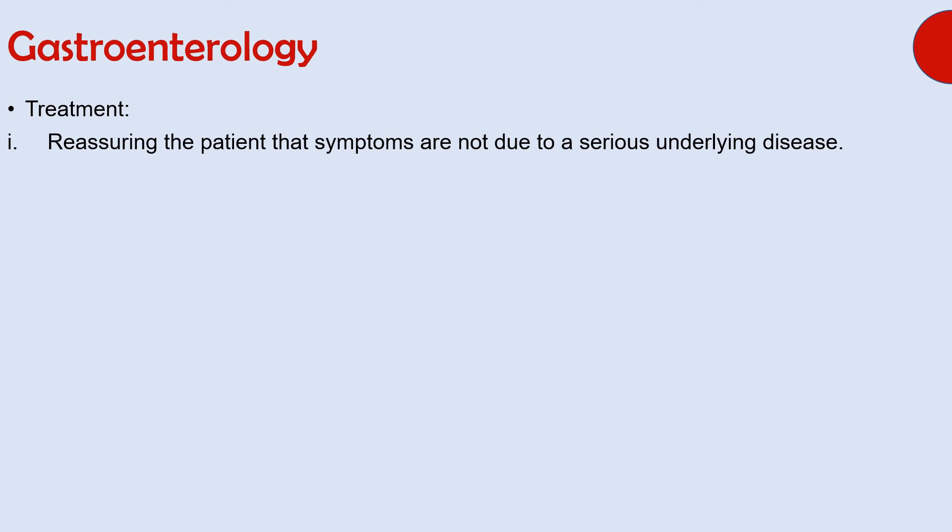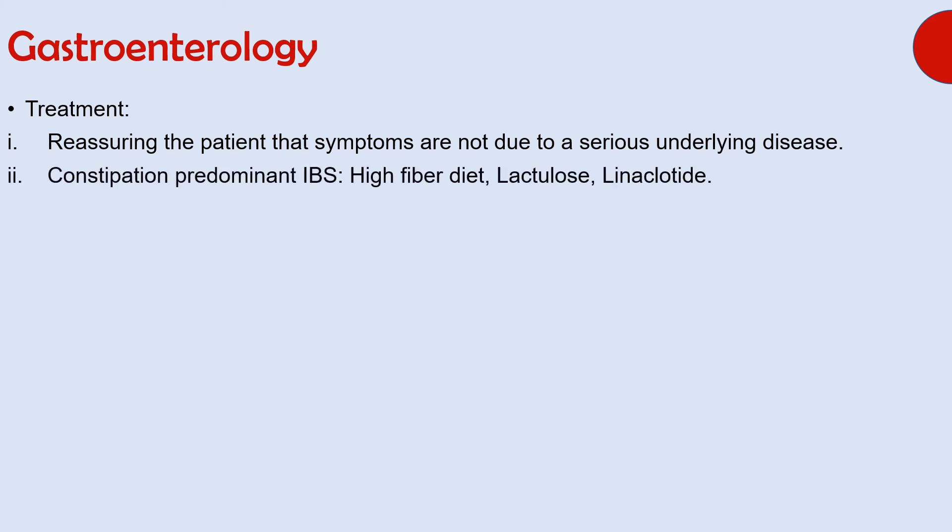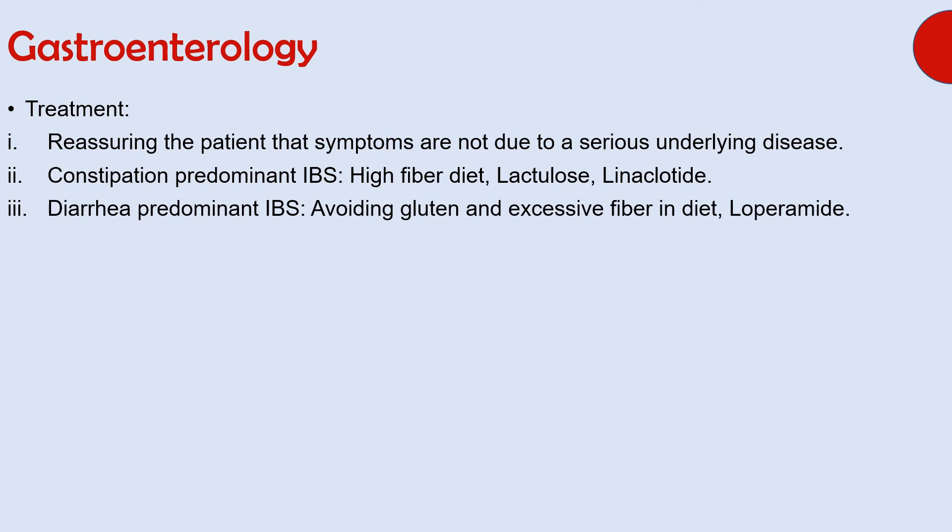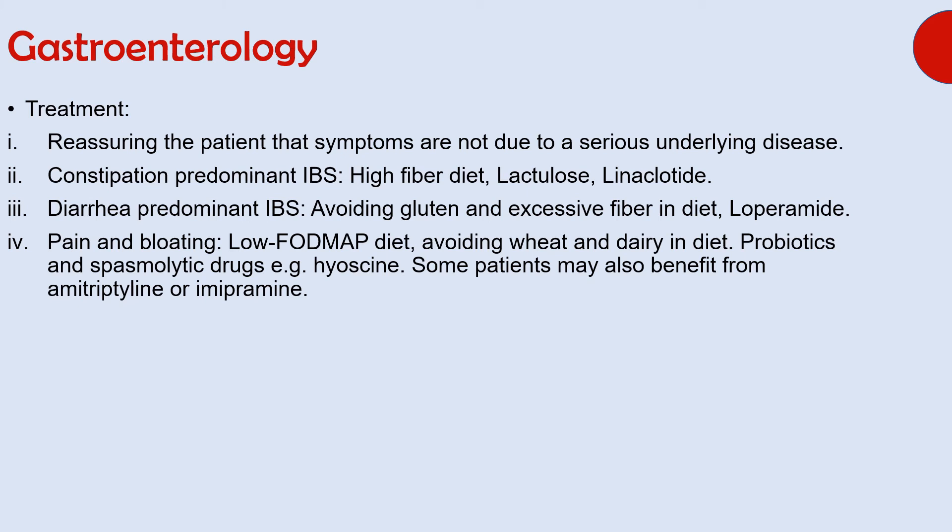Treatment begins with reassuring the patient that symptoms are not due to a serious underlying disease. If reassurance alone does not work, treatment is tailored to the predominant symptom. Constipation-predominant IBS is treated with high fiber diet, lactulose, and linaclotide. Diarrhea-predominant IBS is treated by avoiding gluten and excessive fiber, and using anti-diarrheal drugs such as loperamide. Pain and bloating is treated with a low FODMAP diet, avoiding wheat and dairy, probiotics, and spasmolytic drugs such as hyoscine.